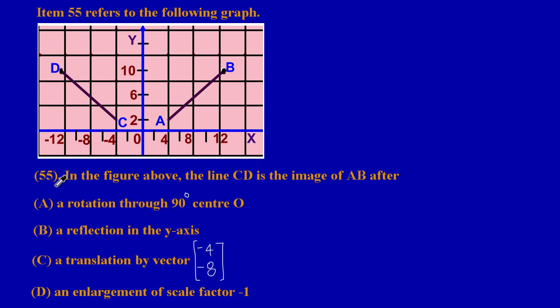Item 55: in the figure above, the line CD is the image of AB after... and here they have given us some options A to D to choose the best option. By looking at it I can simply say that the answer is part B, which is a reflection in the y-axis. Let's circle it, this is the correct answer.